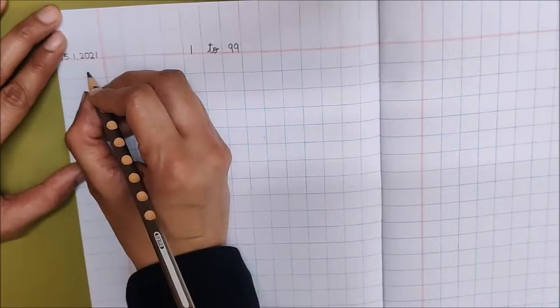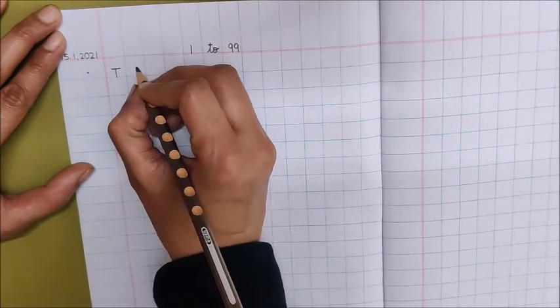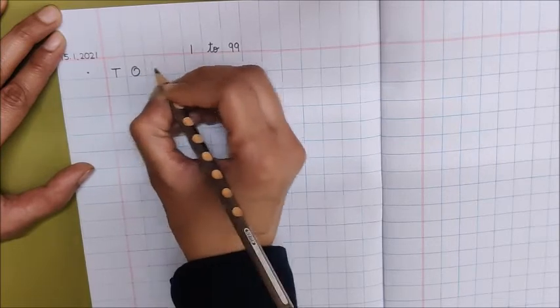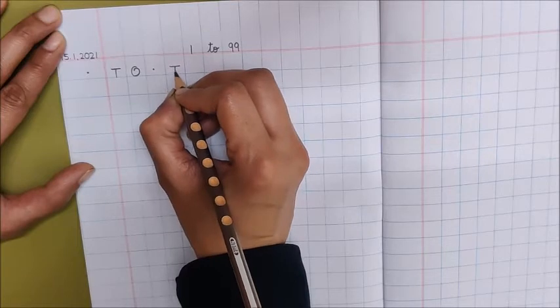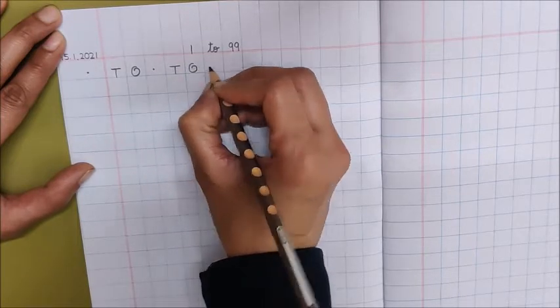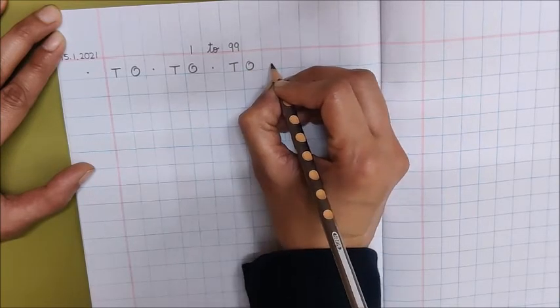Now below the date put a dot and write down T10's house, O01's house. Again put a dot. Then write down again T0 dot, T0 dot, T0.